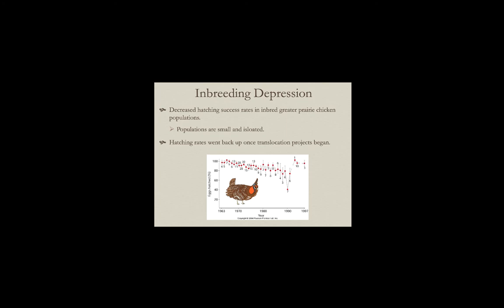Translocation is when you take individuals from one population and move them into another to reduce inbreeding, giving isolated populations more mating options besides close relatives. This type of genetic rescue — suddenly increasing the genetic diversity of the population — is really artificial gene flow. The birds can't do the gene flow themselves because their populations are too isolated, but if you capture individuals from one population and transport them to another location, you are doing the gene flow for them.